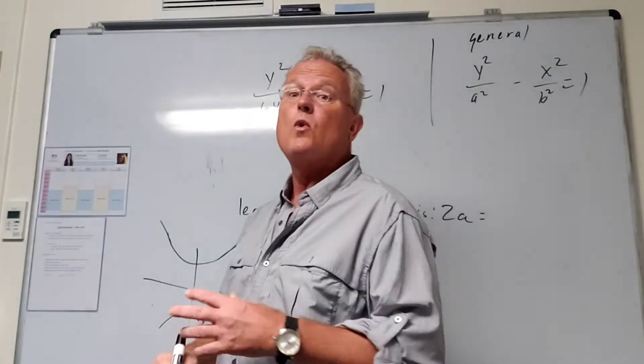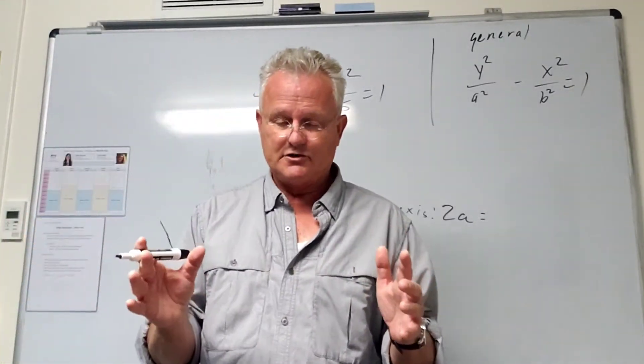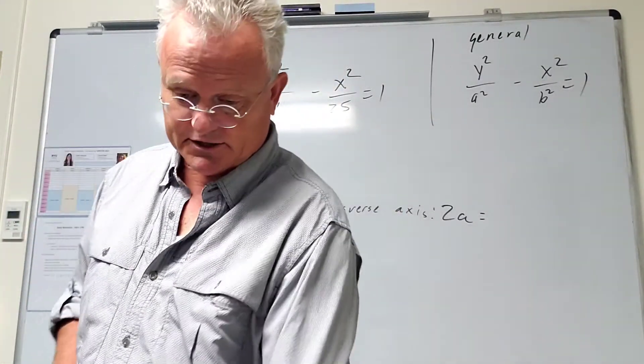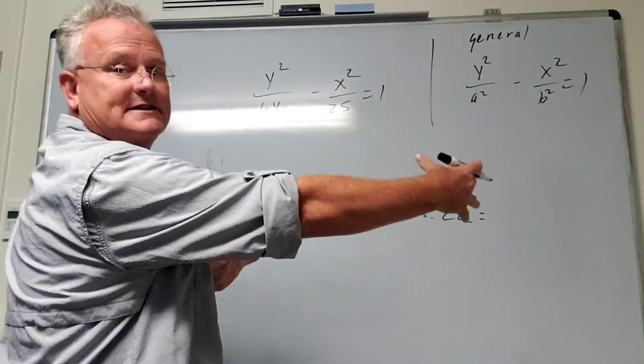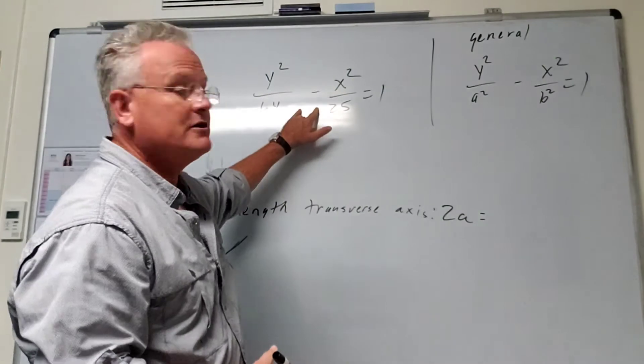Well, clearly this is a y-squared minus x-squared, so that's why on the conic section sheet that I gave you, under hyperbolas on the right side, that's the y-squared minus x-squared type of equation.